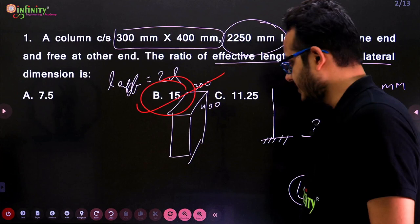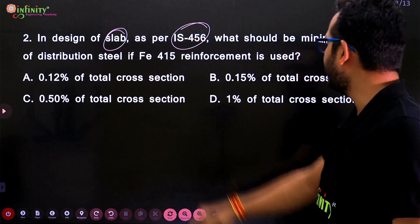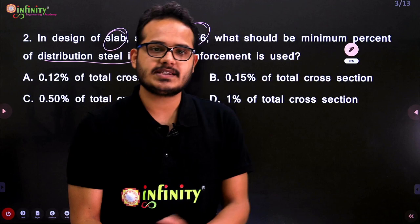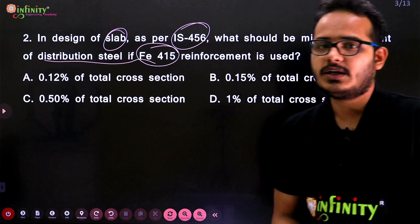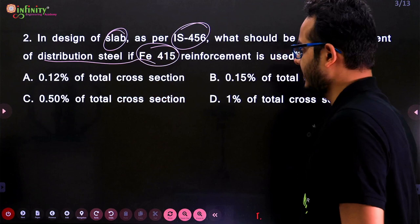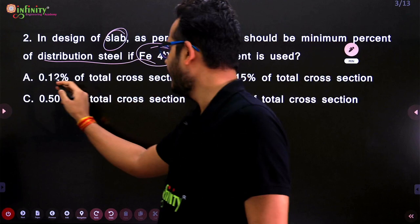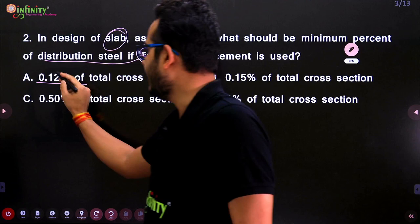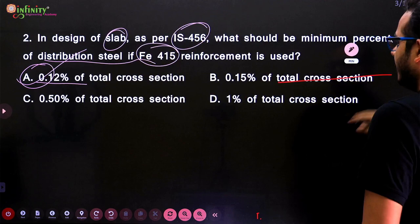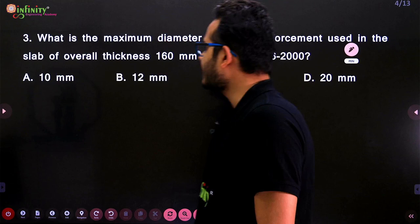Next question: In the design of a slab as per IS 456, what should be the minimum percentage of distribution steel if Fe 415 reinforcement is used? The minimum percentage varies with the grade of steel. For Fe 250 it is 0.15% of total cross-sectional area, and for Fe 415 it is 0.12% of total cross-sectional area. The answer is (a).